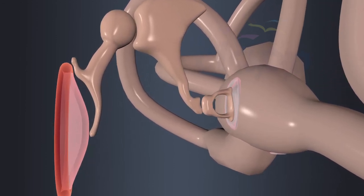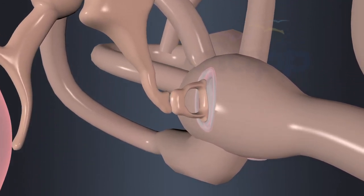Oval window is a membrane-covered opening leading to the inner ear.